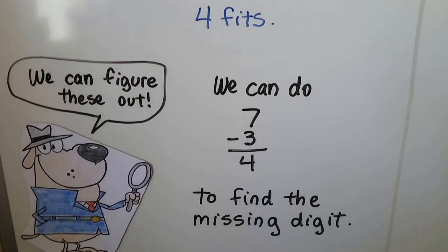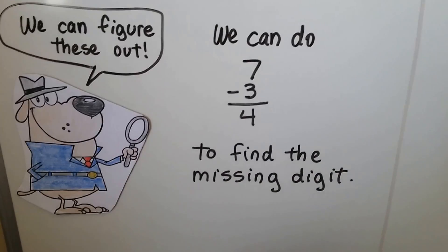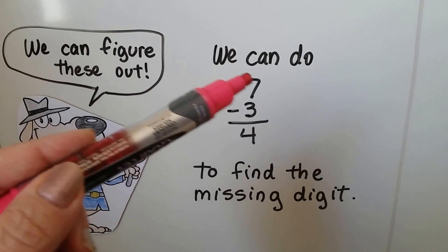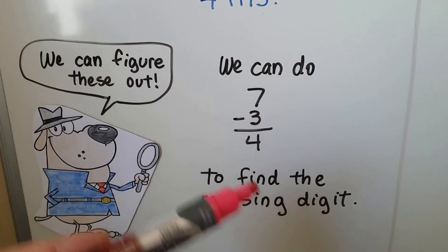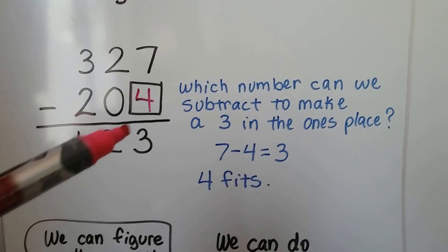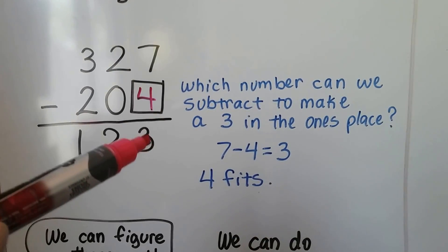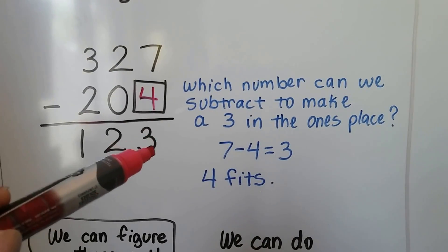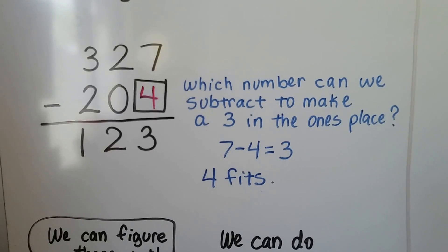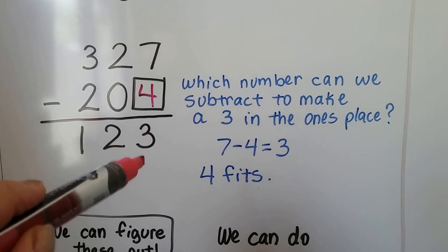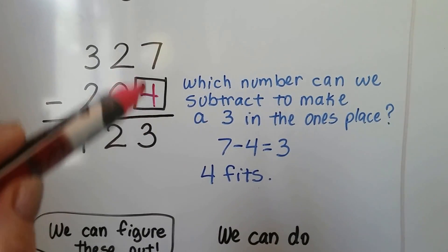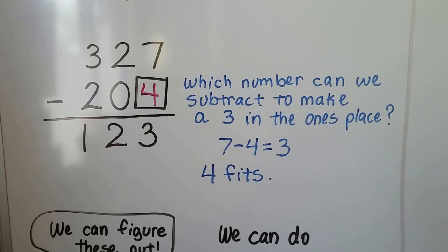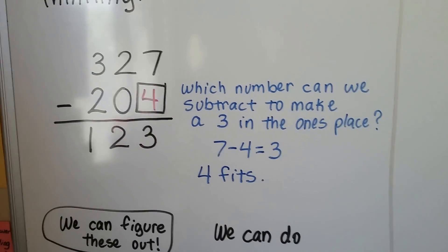So we can figure these out. We can be a number detective. We can also do 7 minus 3 to get 4 to find the missing digit. We can take this 7 and subtract the sum in the ones place to find that missing one. Because 4 plus 3 equals 7, they're all fact families. They're all parts of a fact family.